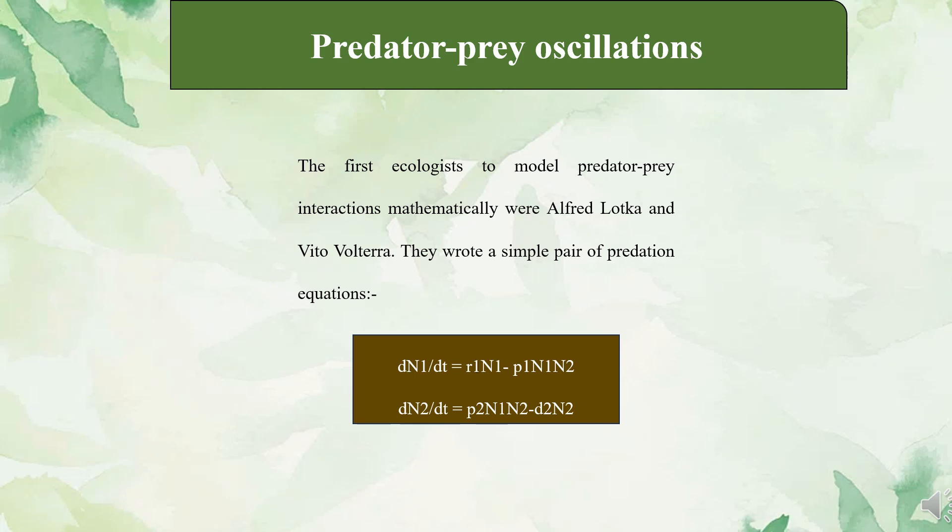They wrote a simple pair of predation equations: dN1/dt = R1·N1 − P1·N1·N2, and a corresponding equation for N2. Here N1 is prey population density, N2 is population density of the predator, R1 is the instantaneous rate of increase of the prey population per head, D2 is the death rate of the predator population, and P1 and P2 are predation constants. P1·N1 represents the functional response, describing the response of individual predators to changes in prey density — a constant in this simple equation. P2·N1 represents the numerical response, describing the way in which prey are converted into new predator individuals.